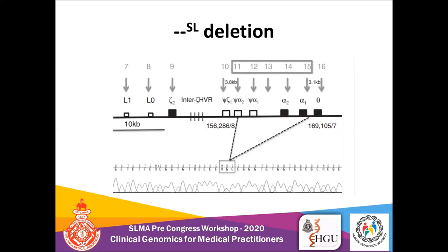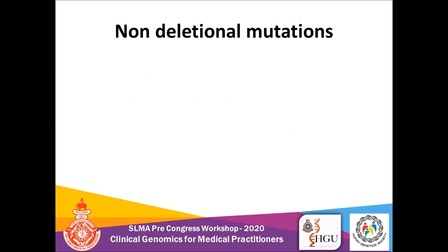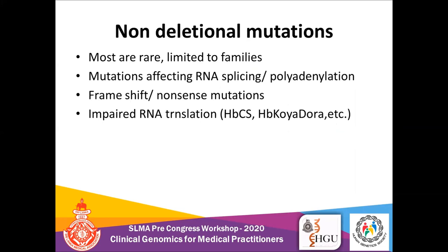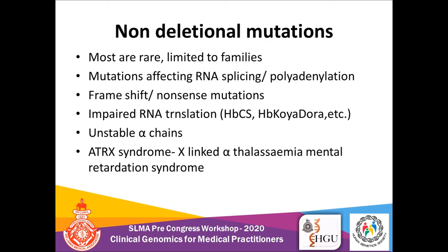There are many other non-deletional mutations causing alpha thalassemia, though these are usually rare and not commonly present in Sri Lanka. They may affect RNA processing, or be frameshift or nonsense mutations, or affect RNA translation, or produce unstable alpha chains. There is one interesting type where the alpha gene cluster is normal, but the mutation is in the ATRX gene on the X chromosome, which has some regulatory effect over the alpha cluster. When there is a mutation in ATRX, it results in alpha thalassemia plus mental retardation — known as X-linked alpha thalassemia mental retardation syndrome.